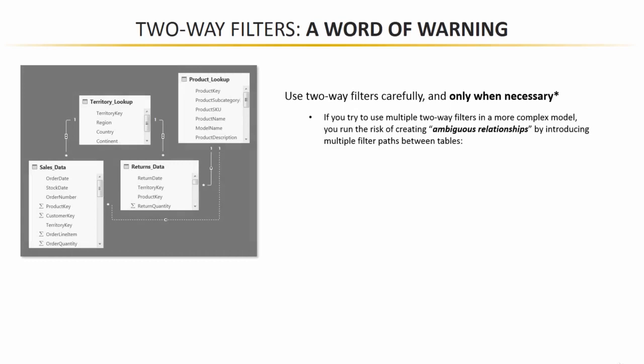So that brings me to my next point, which is a word of warning about two-way filters. The fact is you've got to use two-way filters carefully and only when necessary. Now there are cases where two-way filters are helpful or sometimes even necessary, like if you want to intentionally filter a lookup based on a data table. But the thing is, two-way filters really aren't recommended for models with multiple data tables, exactly like the one that we're working with.